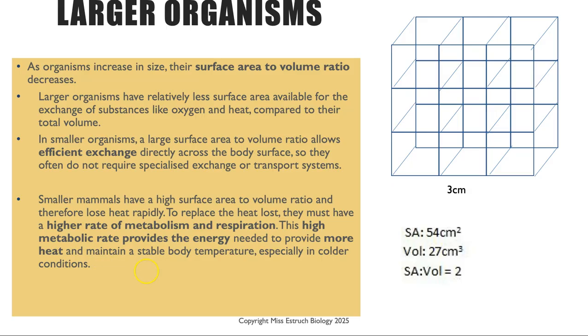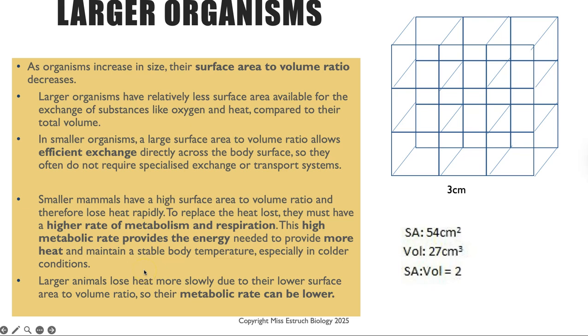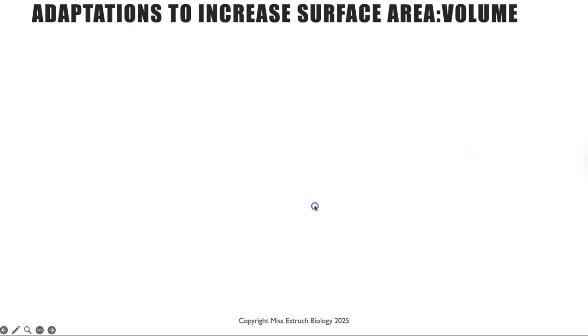Larger animals lose heat more slowly across their surface because they have that lower surface area to volume ratio. And because of this their metabolic rate can be relatively lower as well. So adaptations then, back to that first concept we were talking about.